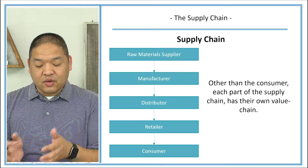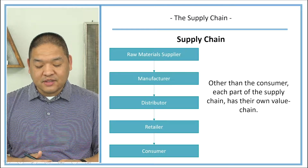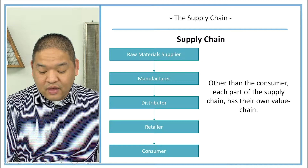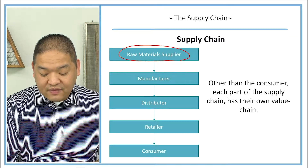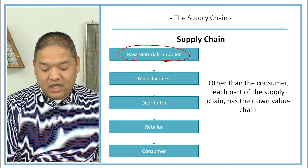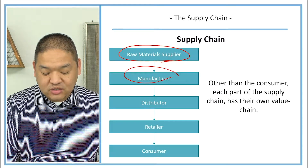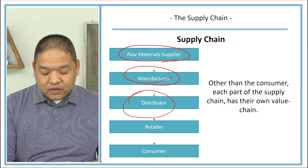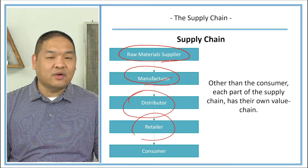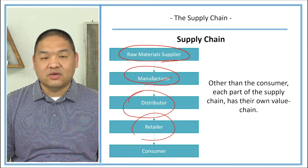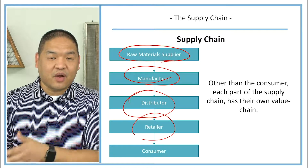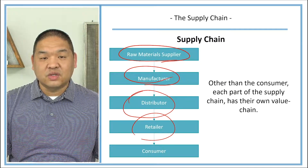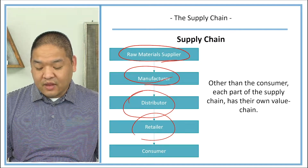Other than the customer, each part of the supply chain has their own value chain. The raw material supplier has their own value chain, as do the manufacturer, distributor, and retailer. The customer probably does not have their own value chain because they're not going to sell that product to someone else — they're the final user of the product.